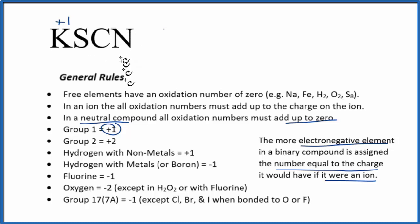So nitrogen is more electronegative than carbon and more electronegative than sulfur. It's the most electronegative, and on the periodic table its ionic charge is three minus. So we could put an oxidation number here of minus three.